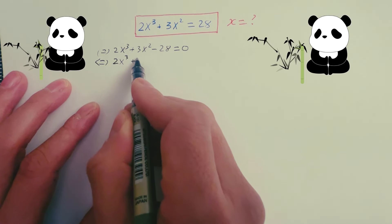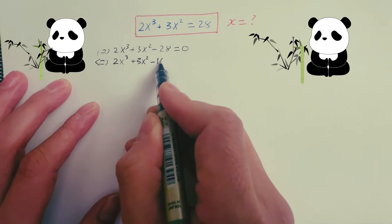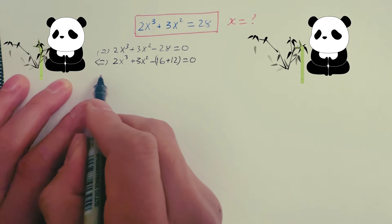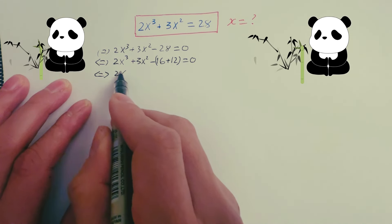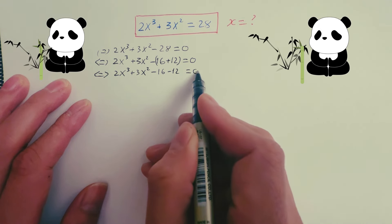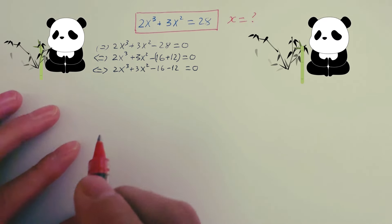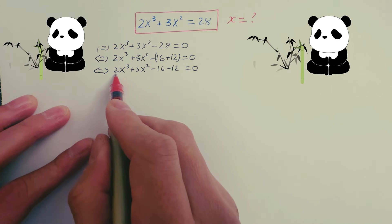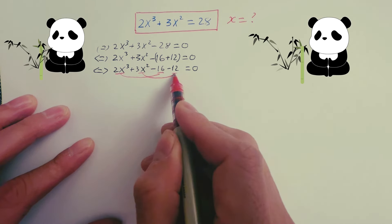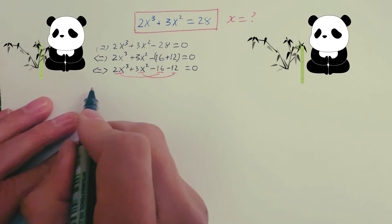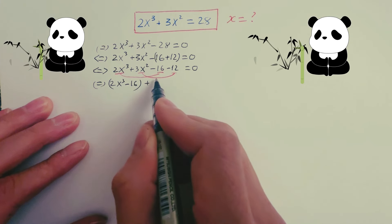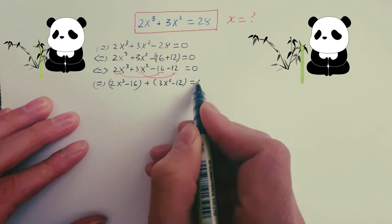Now you can rewrite 28 as 16 plus 12. So the equation becomes 2x cubed plus 3x squared minus 16 minus 12 equals zero. Now you make pairs: that one with that one as one pair, and that one with that one as another pair.